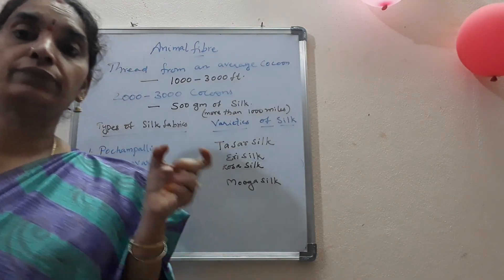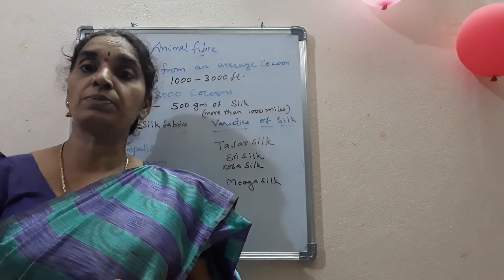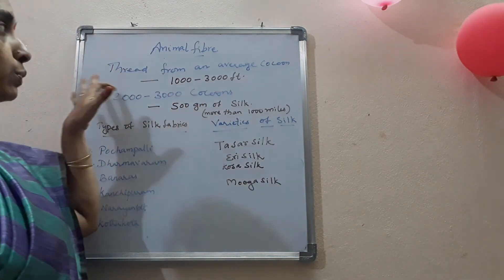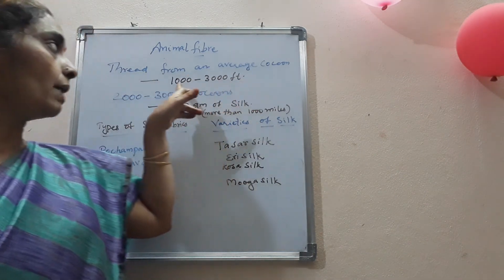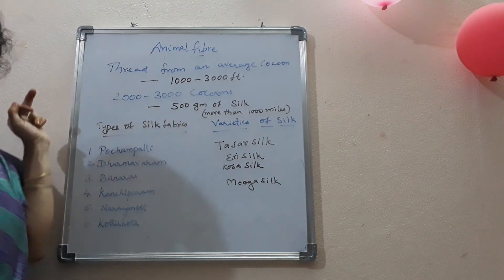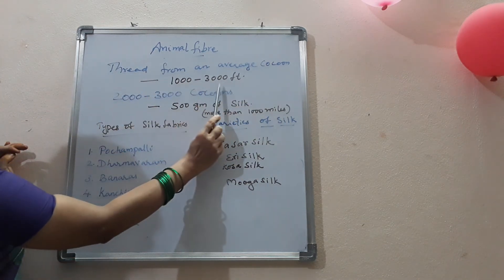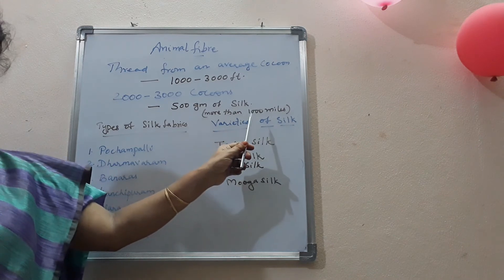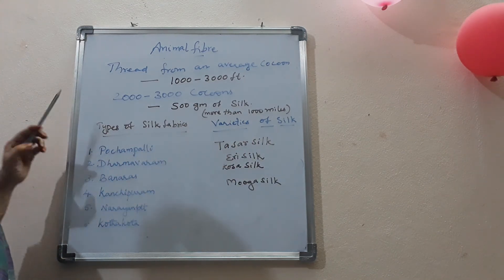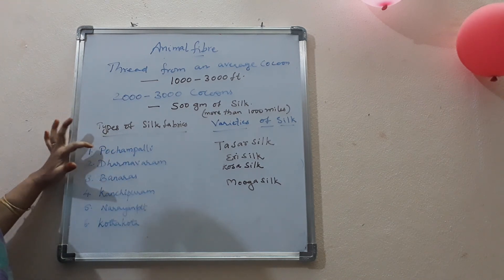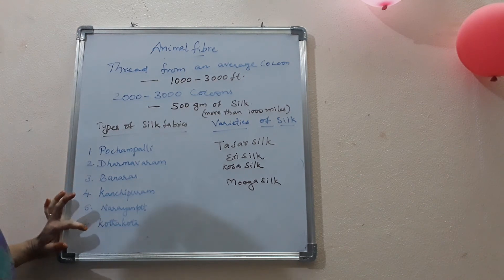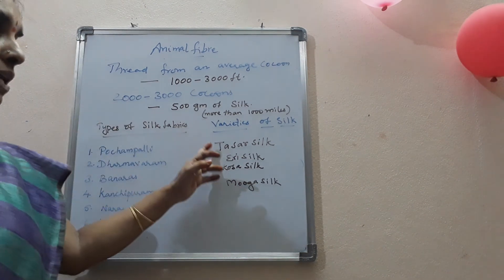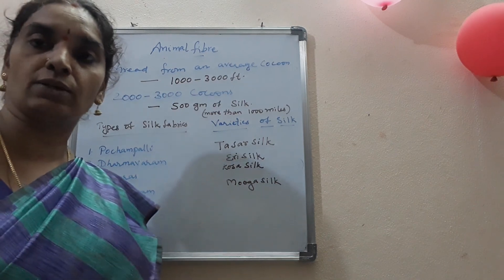Within 2 to 3 weeks of the formation of the cocoon, the larvae should be killed; otherwise it transforms to the adult stage and spoils the cocoon so that we cannot get the continuous silk thread. The thread from an average cocoon is about 1000 to 3000 feet, and about 2000 to 3000 cocoons are required to get 500 grams of silk. Silk fabrics get their names from places such as Pochampalli, Dharmavaram, Banaras, Kanchipuram, Narayanpet, and Kattakota. Varieties of silk include Tassar, Zeri, Kosa, and Muga.